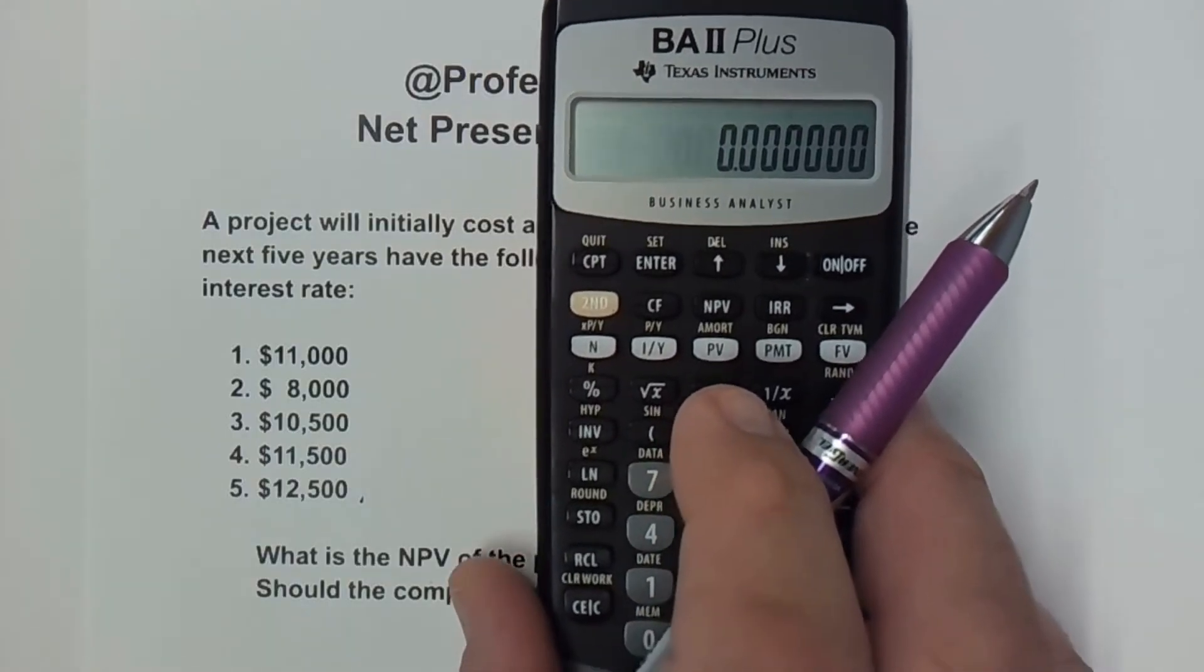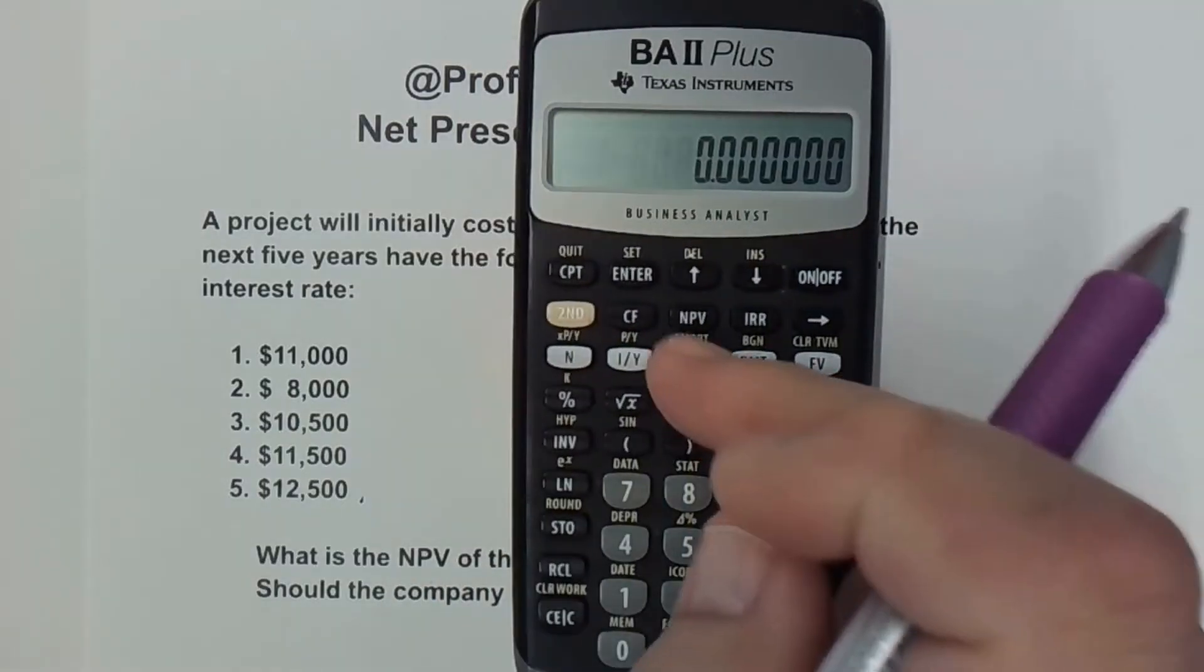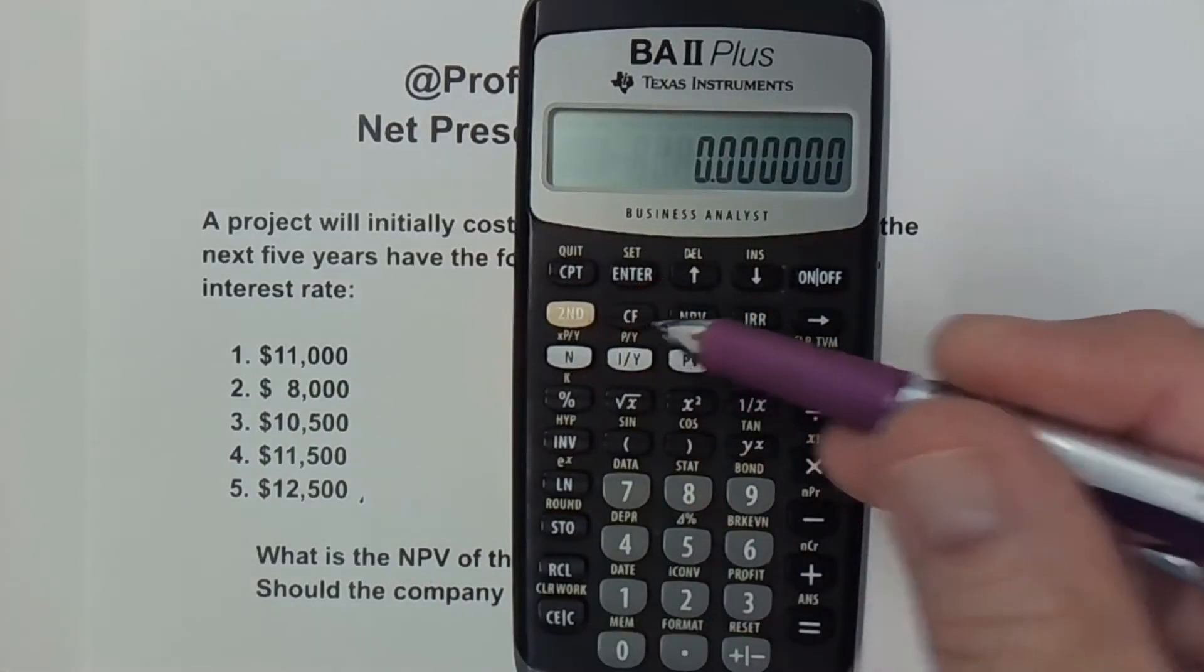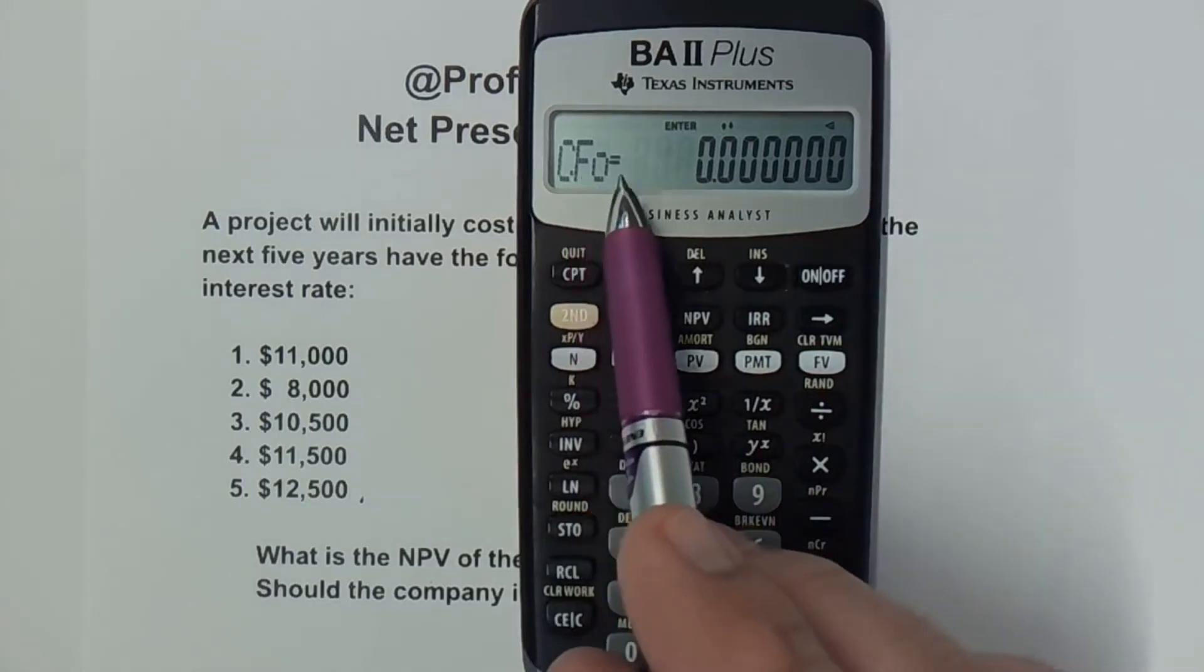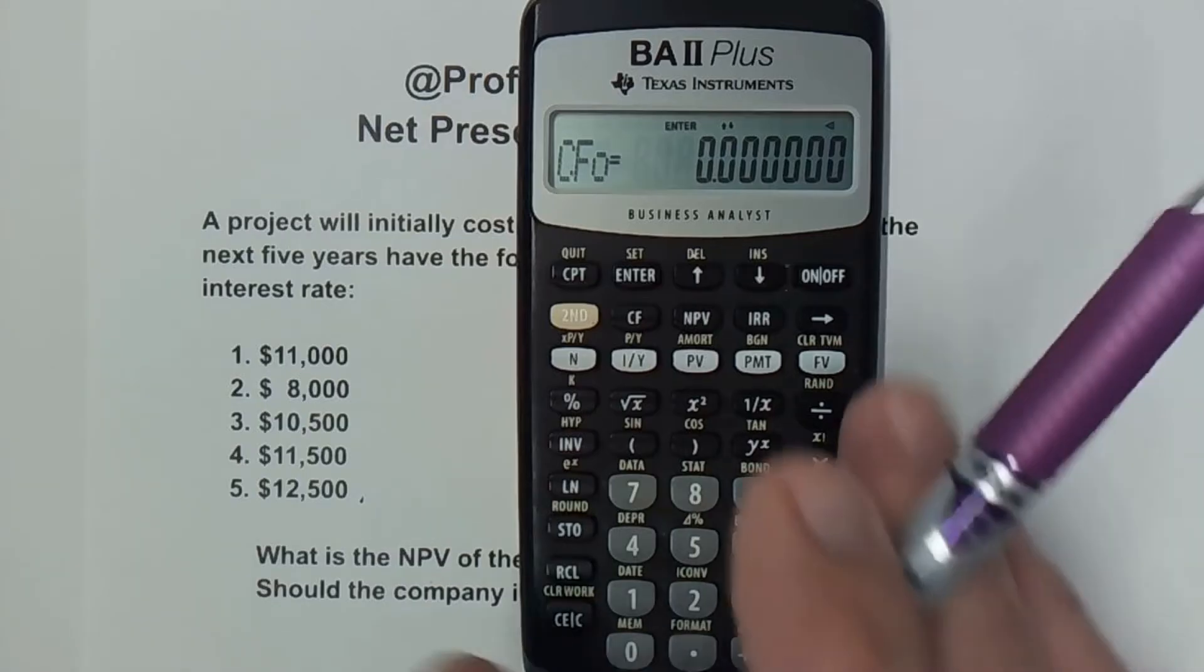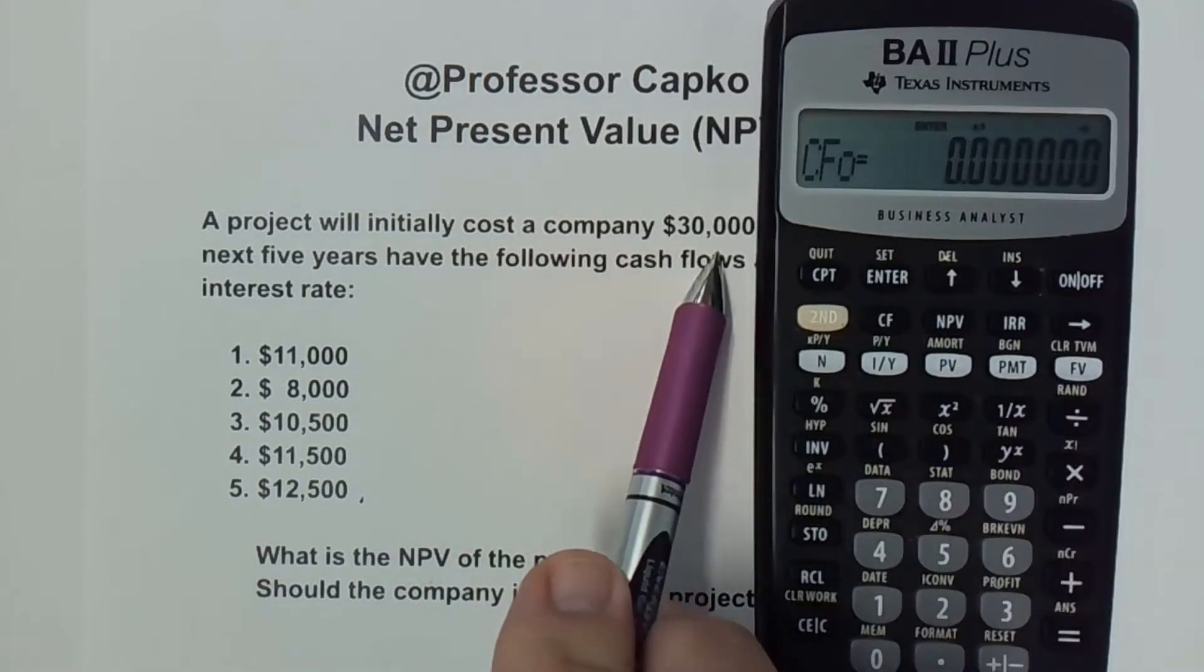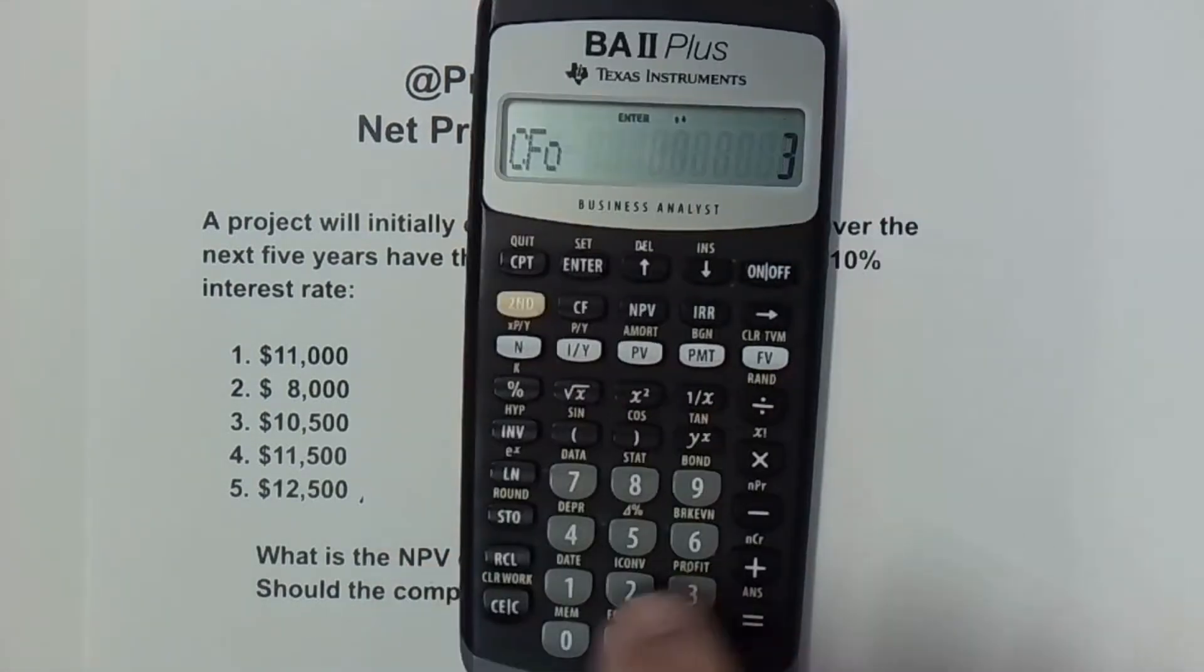And we're going to start entering information. So the first thing we need to do is account for this $30,000 and we're going to hit the CF button. That stands for cash flow. I hit that and it's got CF sub 0. In other words, what's our initial cash flow? In our case, we're spending $30,000.